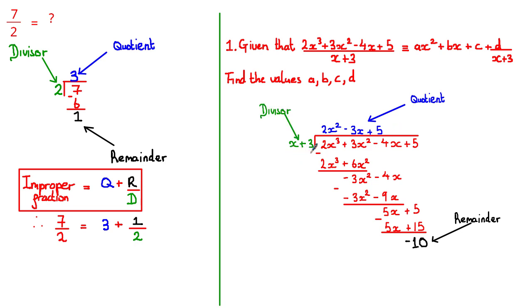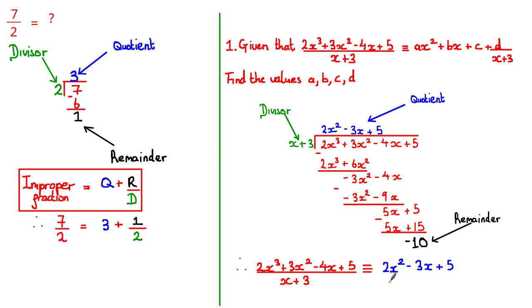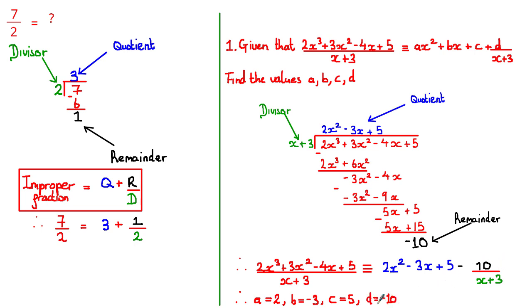Referring back to the formula and putting this all together: (2x³ + 3x² − 4x + 5) / (x + 3) is equivalent to the quotient 2x² − 3x + 5, minus 10 over (x + 3). We've now written the left-hand side in the expected mixed form. Therefore, A = 2 (coefficient of x²), B = −3 (coefficient of x), C = 5, and D = −10.